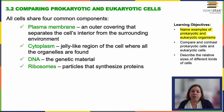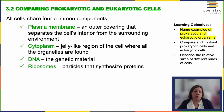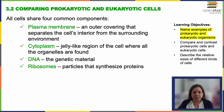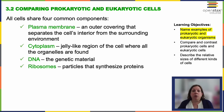Prokaryotes and eukaryotes exhibit distinct characteristics that impact their function and roles in the organisms they make up. Prokaryotic cells are smaller and simpler — they lack membrane-bound organelles and a nucleus, so the DNA just floats free in their cytoplasm. Eukaryotic cells are much larger and more complex; they contain membrane-bound organelles, including a well-defined nucleus where the DNA is housed.